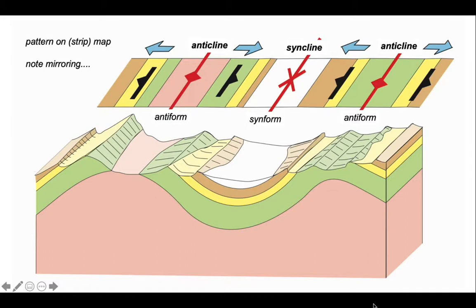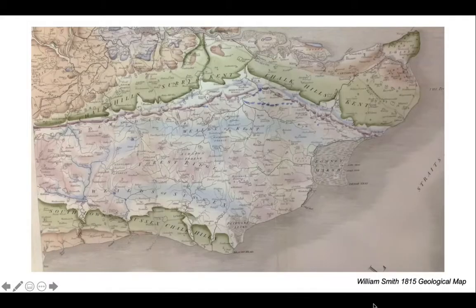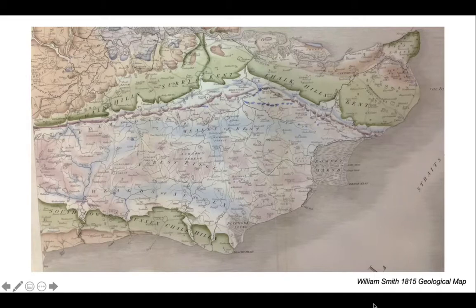We can use these symmetry patterns to identify folds and interpret them on real geological maps. So let's turn to William Smith's 1815 map or part of it for southeast England here. You can recognise the south coast, you can recognise the Thames estuary at the top.